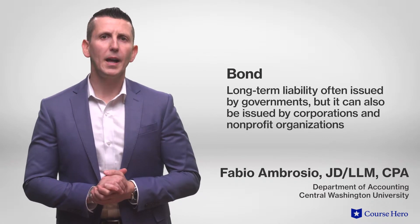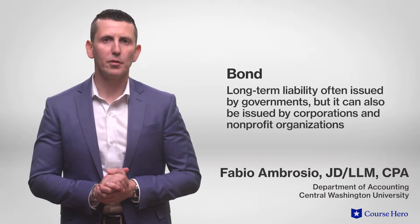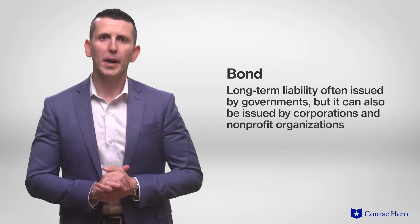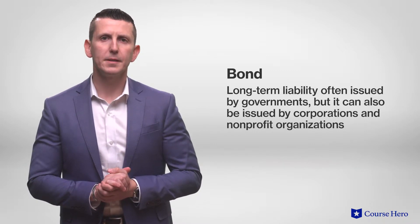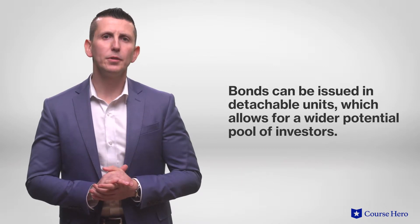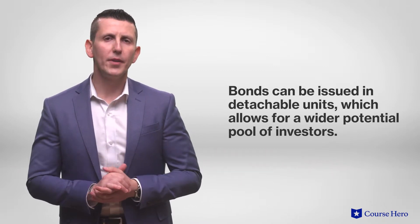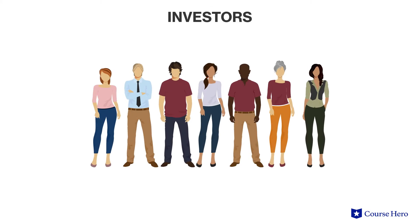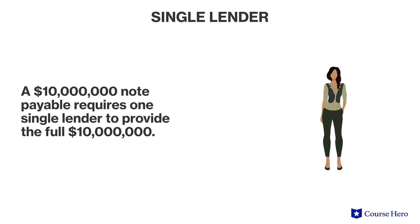A bond is a long-term liability often issued by governments, but it can also be issued by corporations and nonprofit organizations. Bonds can be issued in detachable units, which allow for a wider potential pool of investors. For example, a $10 million bond can be broken up across investors in increments of $1,000, and thus 10,000 investors could be involved. In contrast, a $10 million note payable requires one single lender to provide the full $10 million.